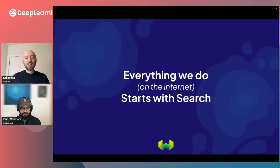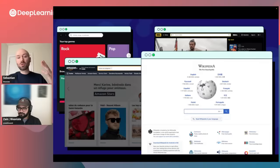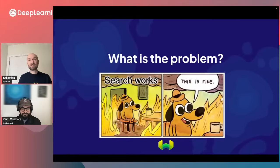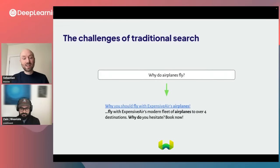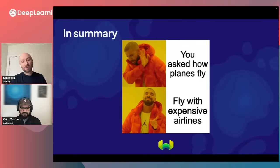Everything we do on the internet starts with search — whether you want to look for music, watch movies, do shopping, or look for information. We've been doing that for decades. The thing is that with classical methods there are some challenges with traditional search. If you run a query like 'why do airplanes fly?' you may get a response that technically matches on keywords but doesn't really explain why airplanes fly — it's more of an ad than an answer to your question.